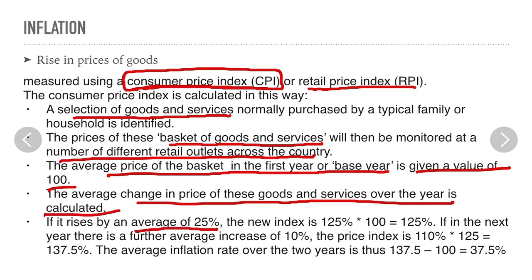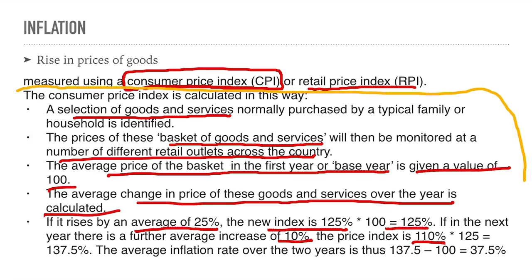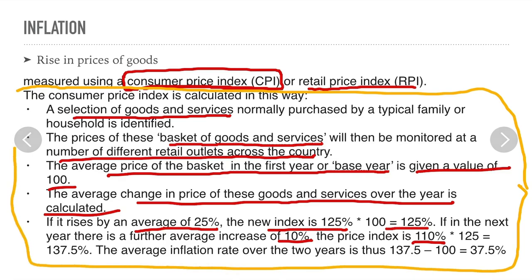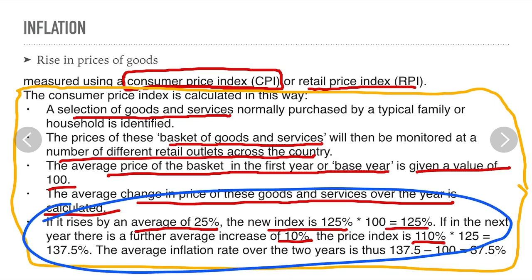If prices rise by an average of 25%, the new index is 125. If in the next year there is a further average increase of 10%, the price index will be 110% of 125. The average inflation rate over the two years is thus 137.5 minus 100, which is 37.5%. This whole section on calculating the consumer price index is not required to be studied.